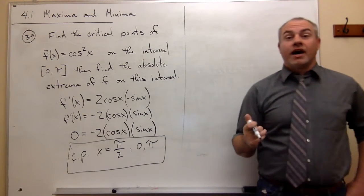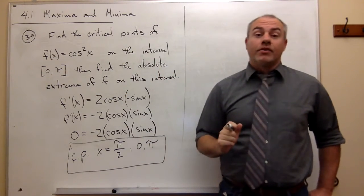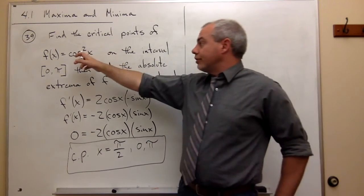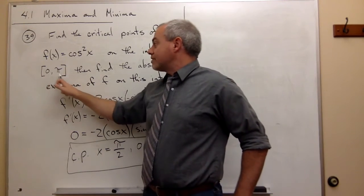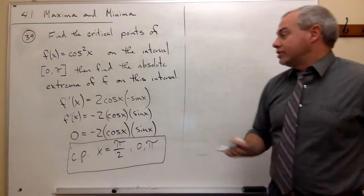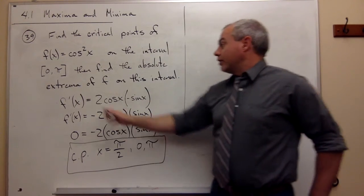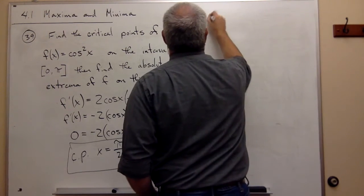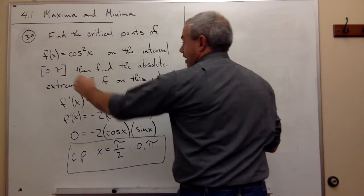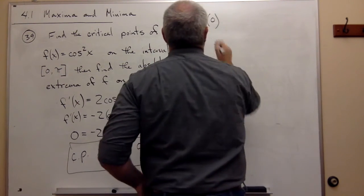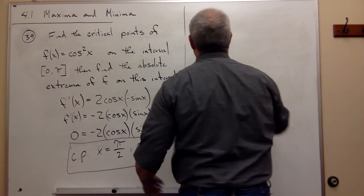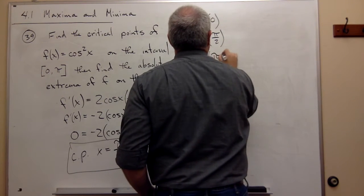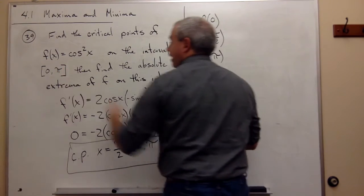Now that I know that, I can go ahead and test for absolute extrema. The way I test for absolute extrema is I evaluate all critical points and all endpoints of my interval in the original function. It just so happens that two of those are the same thing — zero is an endpoint and a critical value, and π is both an endpoint and a critical point. So I just have three things to test: f(0), f(π/2), and f(π).